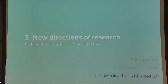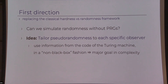This brings me to the last several years, in which there has been fast-paced progress. I'm going to talk about two main directions. The first is replacing the classical hardness-versus-randomness framework with a new form that allows de-randomization without PRGs. The natural idea is to tailor the pseudo-randomness to the specific algorithm — rather than one PRG for all, look inside the machine to generate pseudo-randomness for that specific machine.